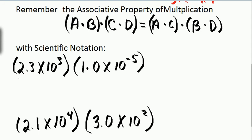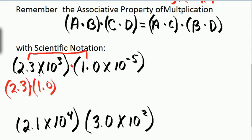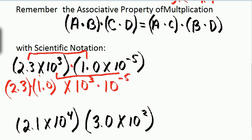That applies to scientific notation when I have 2.3 times 10 to the 3rd, times 1.0 times 10 to the negative 5th. I multiply the two decimal factors: 2.3 times 1.0 is 2.3. Then I also have 10 to the 3rd times 10 to the negative 5th.